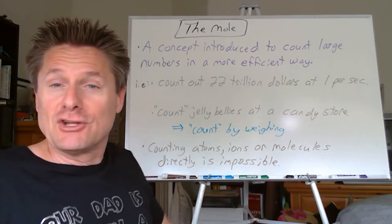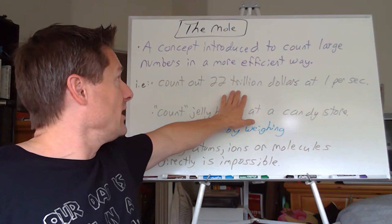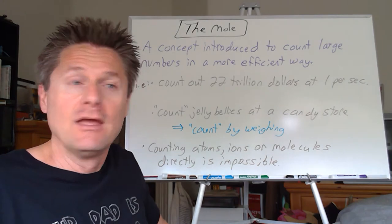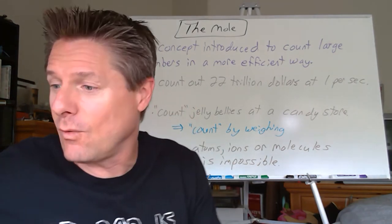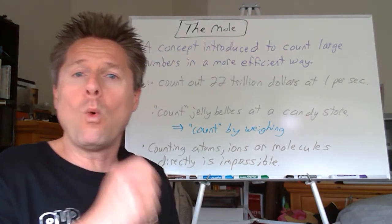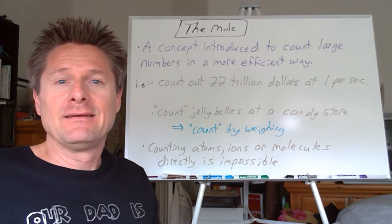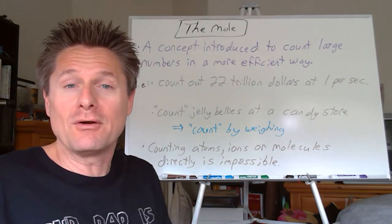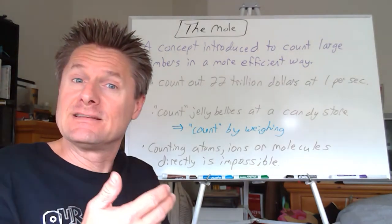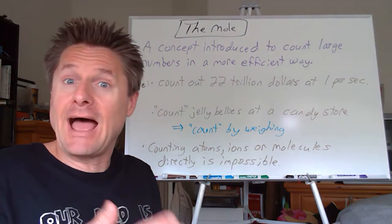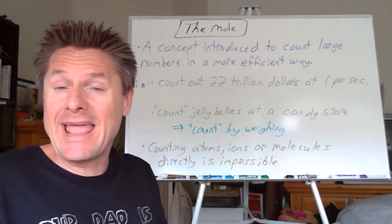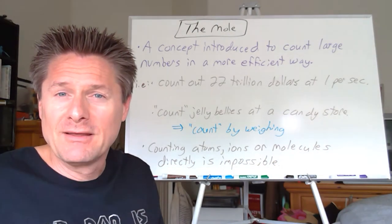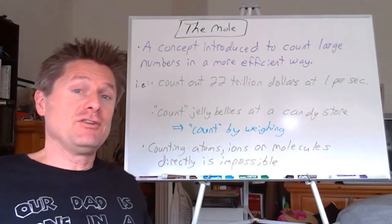Well, you could actually do the calculation if you wanted to. Just take $22 trillion. What's that? $22 times 10 to the 12th? So take $22 trillion times 10 to the 12th on your calculator. Count them out one bill per second. That would be $22 trillion seconds to count that $22 trillion $1 at a time. Convert seconds to minutes, minutes to hours, hours to days, days to years. Say 365, give or take a leap year issue in there. And look at how many years that is.